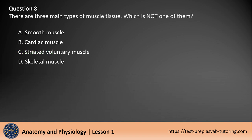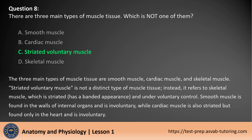Question 8. There are 3 main types of muscle tissue. Which is not one of them? A. Smooth muscle. B. Cardiac muscle. C. Striated voluntary muscle. D. Skeletal muscle. The answer is C. The 3 main types of muscle tissue are smooth muscle, cardiac muscle, and skeletal muscle. Striated voluntary muscle is not a distinct type of muscle tissue; instead, it refers to skeletal muscle, which is striated, has a banded appearance, and is under voluntary control. Smooth muscle is found in the walls of internal organs and is involuntary, while cardiac muscle is also striated but found only in the heart and is involuntary.